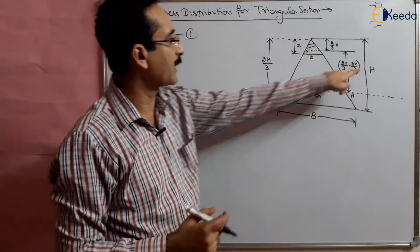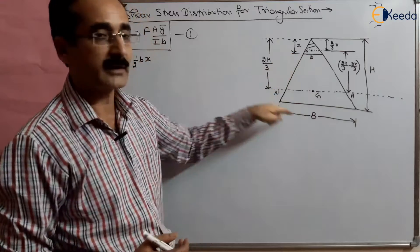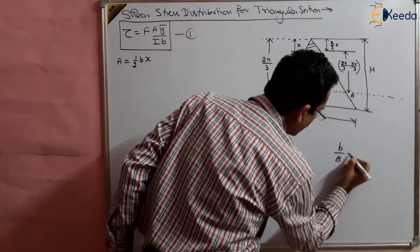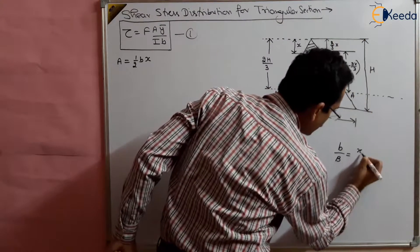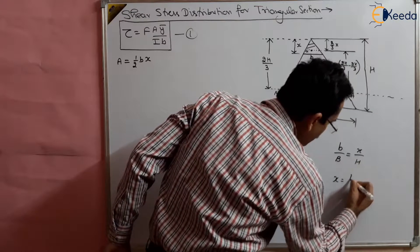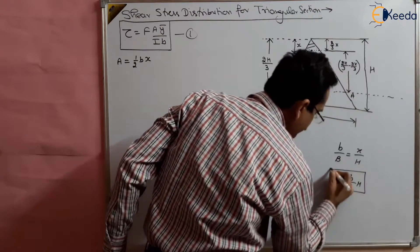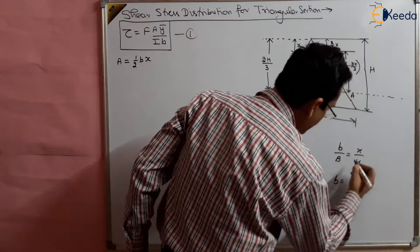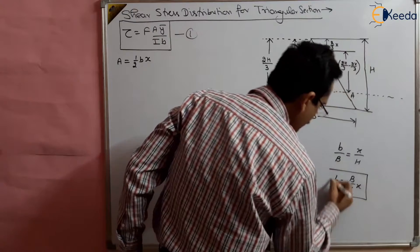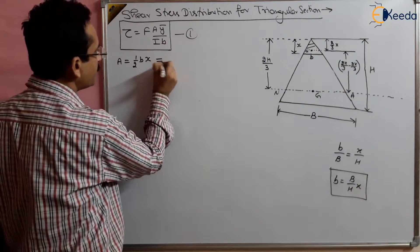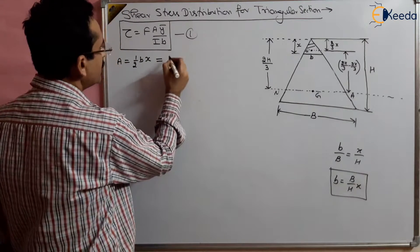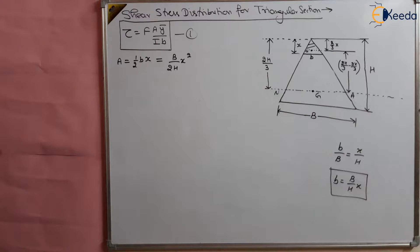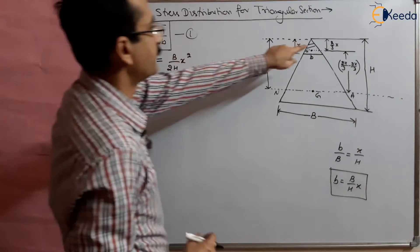Using the similar triangles relation, we can express small b as (B/H) × x. Substituting this into the area formula, the area of the small triangle simplifies to (B/2H) × x². This removes one variable, expressing area entirely in terms of x and the known section dimensions B and H.